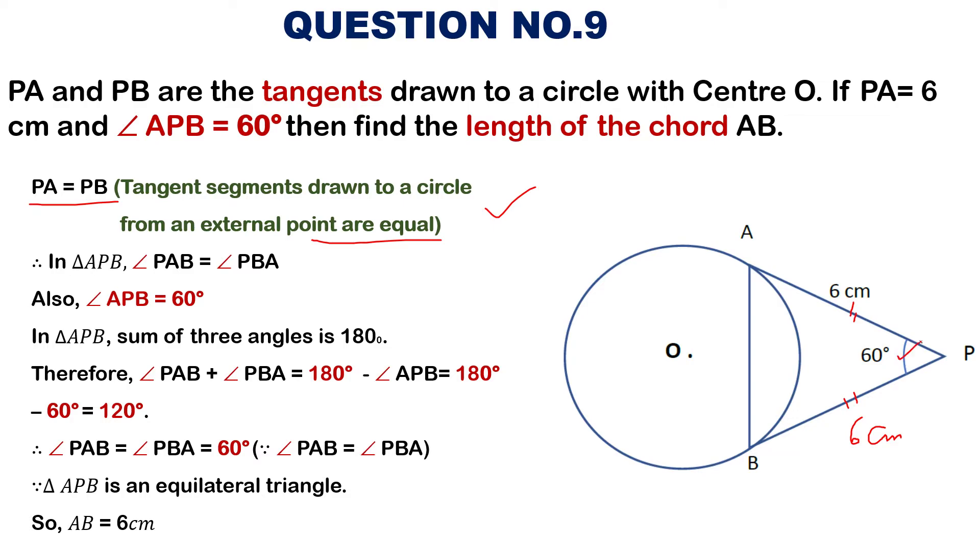60 degree is given, keep in your mind. So, in triangle ABP, in this triangle, what is the sum of three angles? The angle sum property of a triangle. If these two sides are equal, these two angles will be equal.